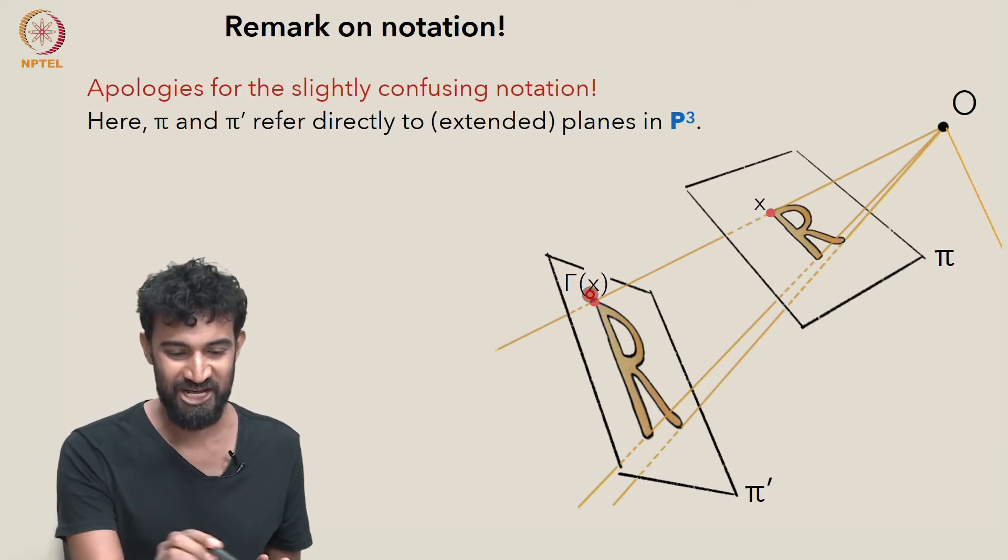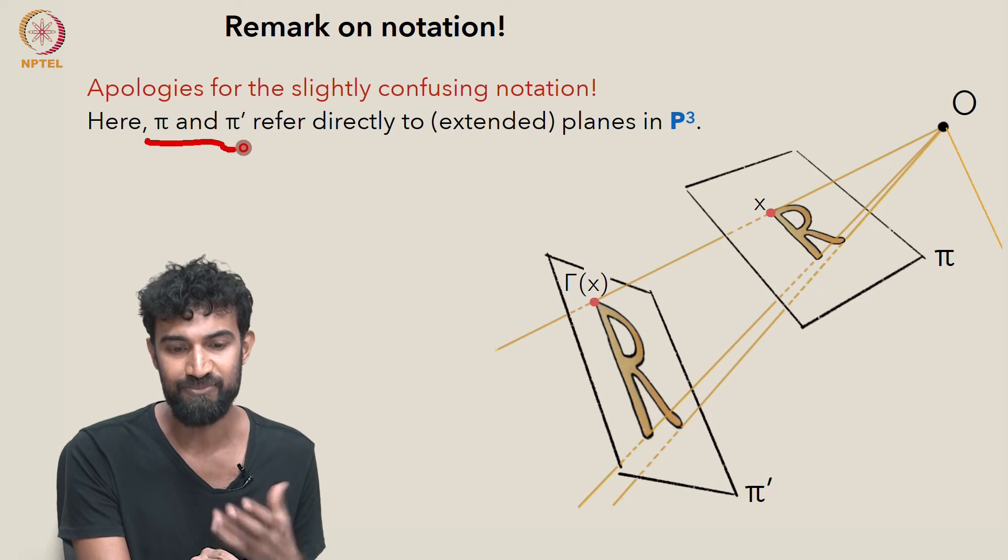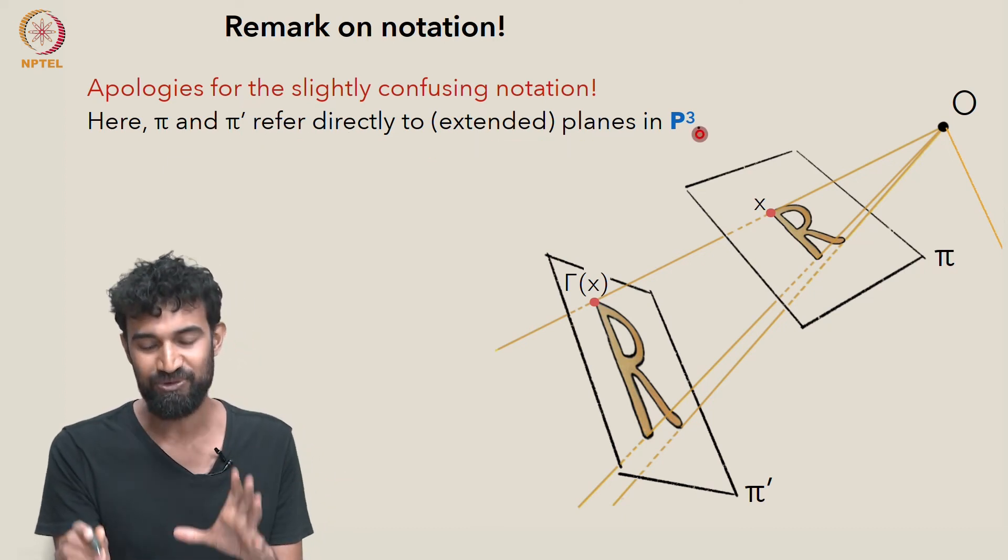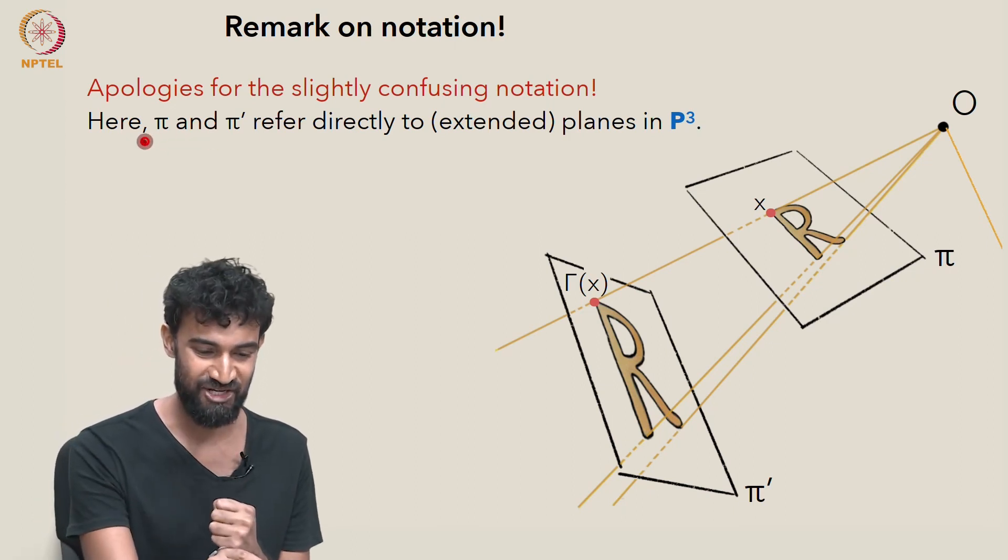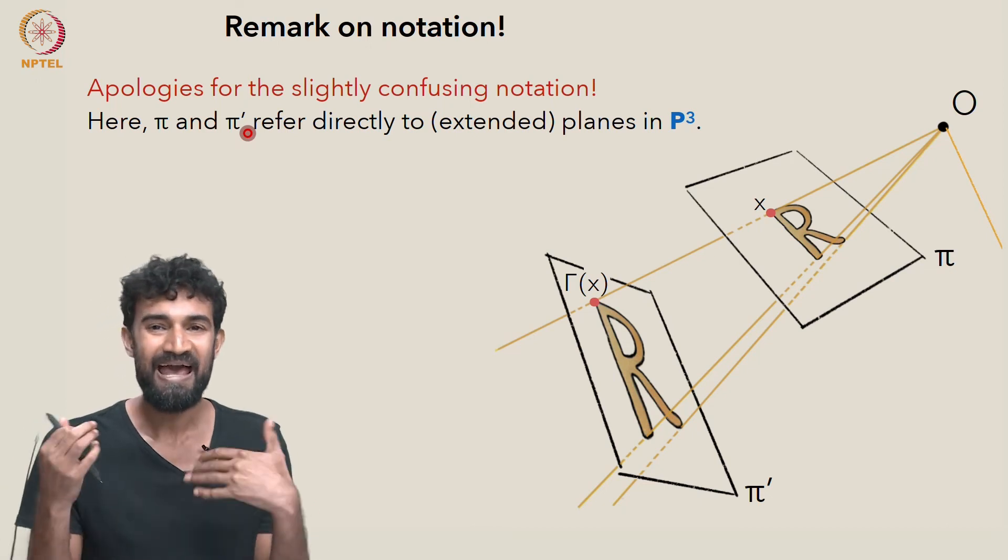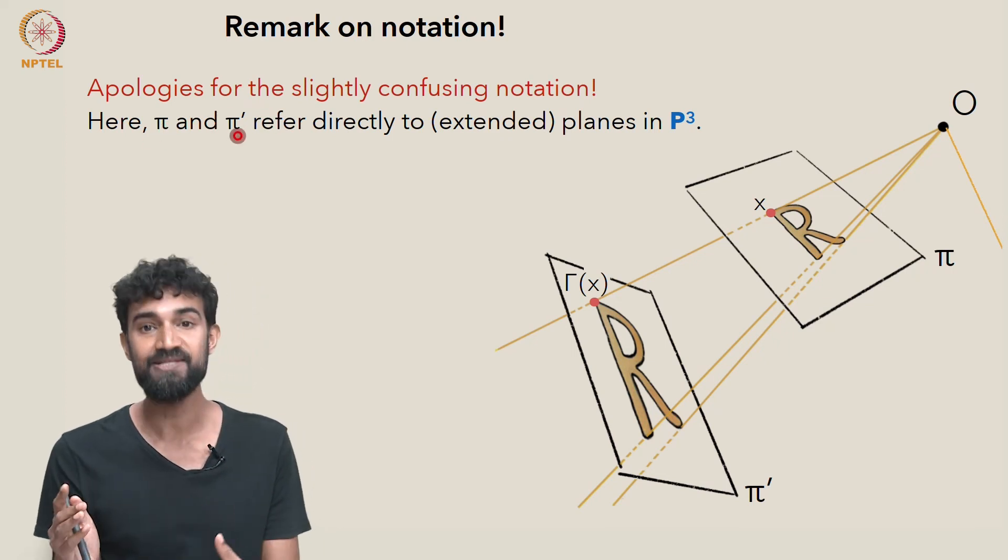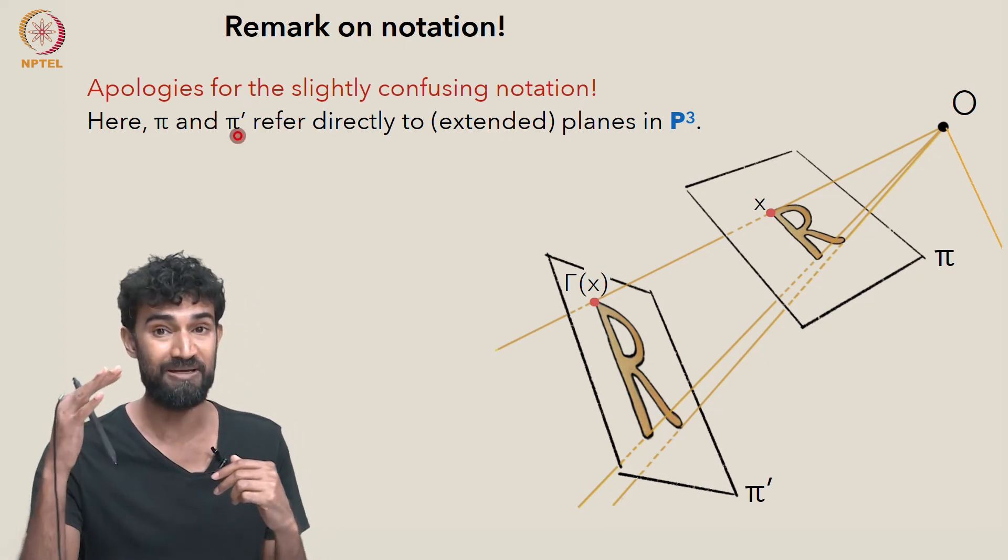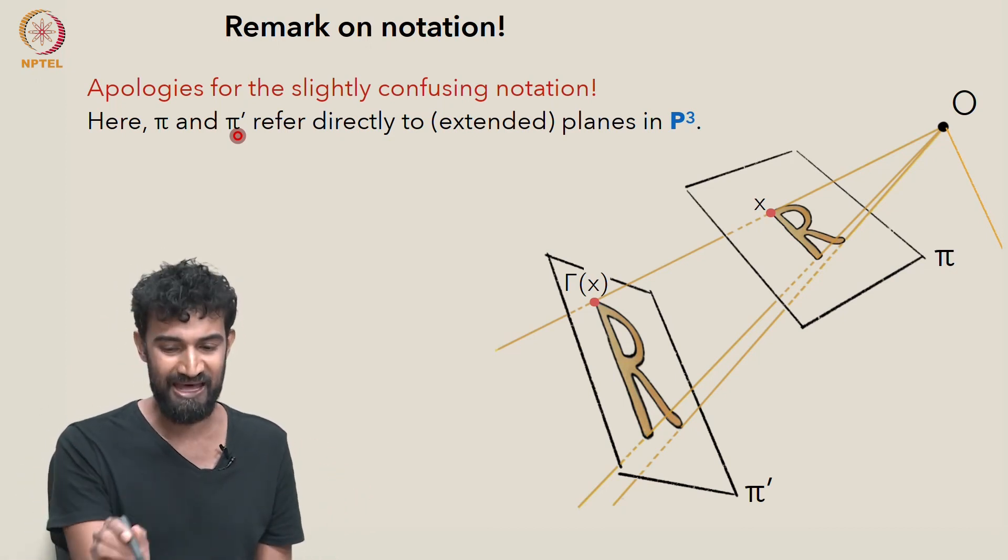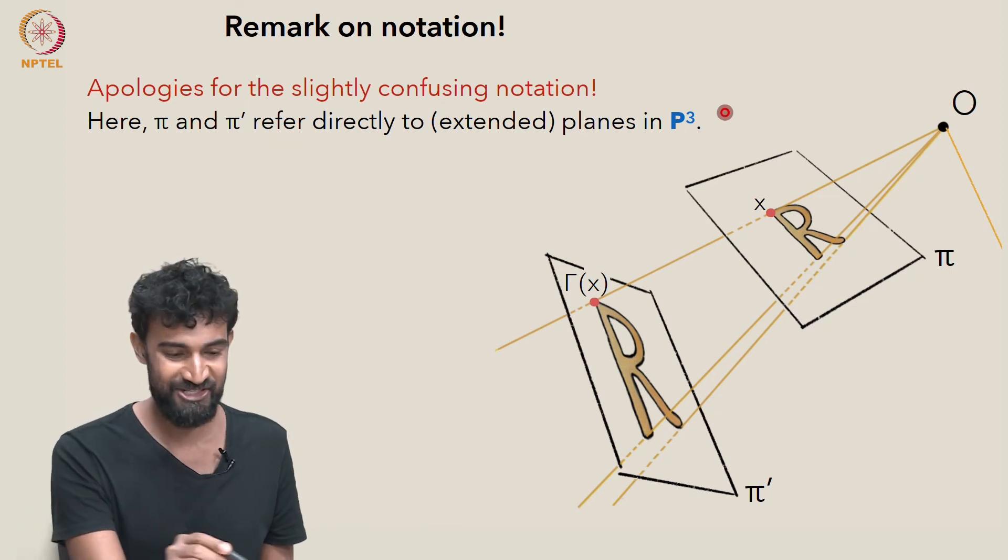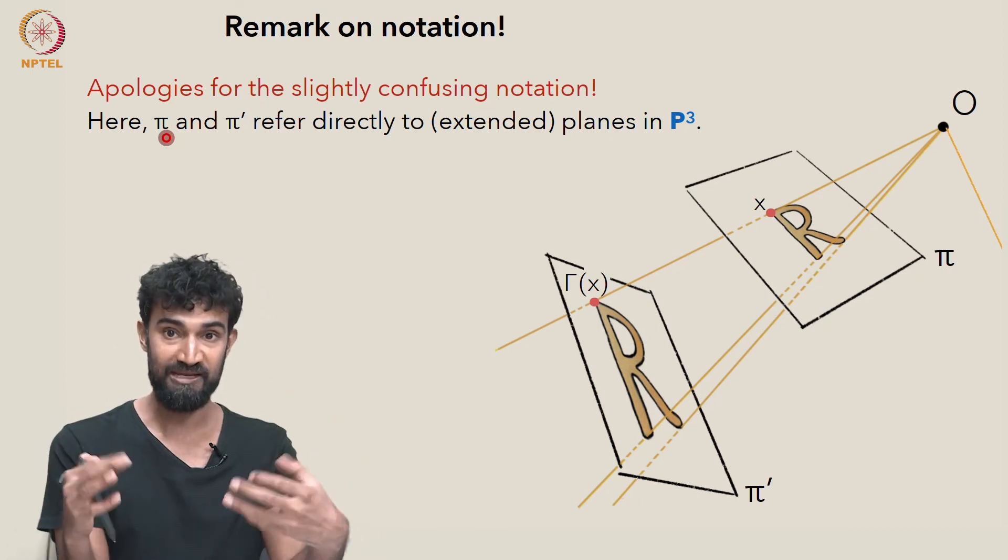I just want to apologize and remark on this slightly confusing notation, because right now I'm using π and π' to refer directly to the extended planes in P3. Whereas earlier, when we're talking about R3, I was using the same notation, π and π', to refer to just the ordinary planes. And we're going to keep doing this. We're going to keep using these Greek letters to refer to planes. And depending on the context, the plane could be in R3 or it could be in P3. So I'll try and be as explicit as I can about which context we're in, both in terms of what I write and what I say. But just keep that in mind. On its own, π could refer to just the ordinary plane, or the extension of that ordinary plane in P3.